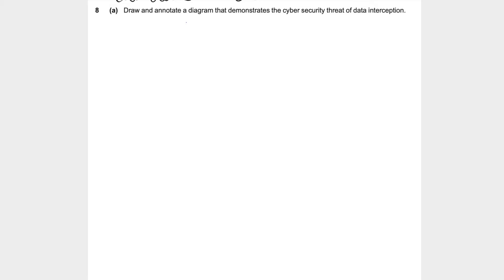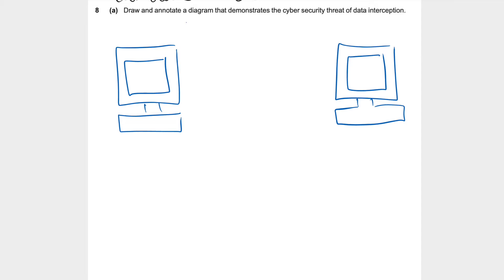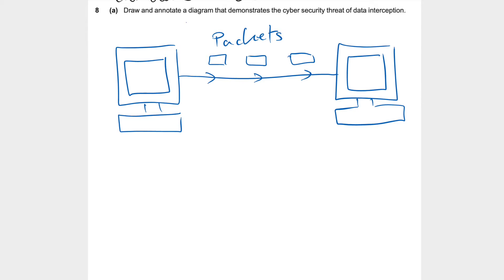Data interception basically means data that's been sent from one computer to another and it's been intercepted somehow. So here's my computer, then another computer, and in between there we've got data being sent in little packets from one computer to another. I'm going to put 'packets of data' — this is user 1 and user 2 — but then there's going to be some interception taking place. Somebody's going to be trying to intercept that data. Basically, it's a cyber security threat.